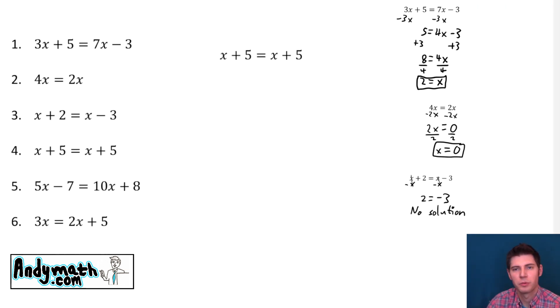Next we'll do number 4. x plus 5 equals x plus 5. We can kind of already see this is the same on both sides, so it's going to be all real numbers, but let's solve it anyway. We'll subtract our x's. Those cancel, and we get 5 equals 5. Now there's definitely no way we can argue with this. 5 does equal 5. No matter what we plug in for x, 5 will always be 5. So this is all real numbers. That's the answer.